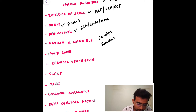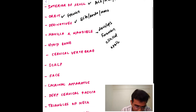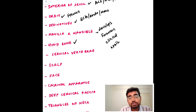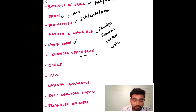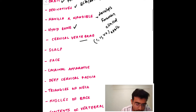For the maxilla and mandible, you need to know how they develop, the foramina in each, their articulations, the clinical aspects, and their ossification. For the hyoid bone, you should recall the clinical anatomy as well as the applied anatomy. For the cervical vertebrae, the typical cervical vertebrae and vertebrae C1, C2, and C7 are particularly important.